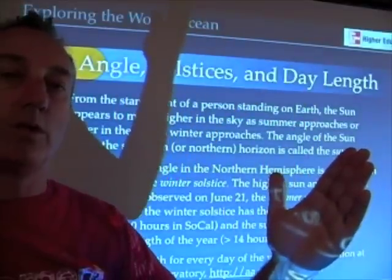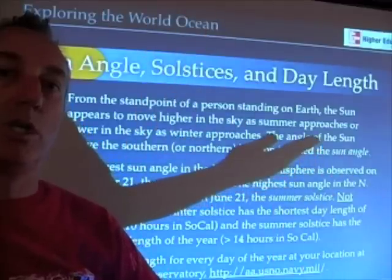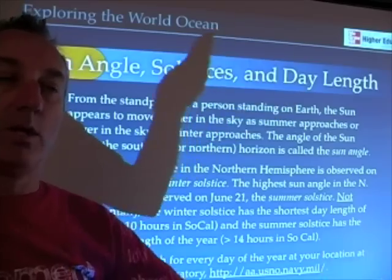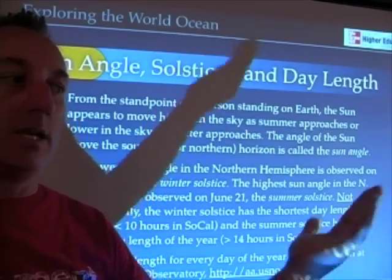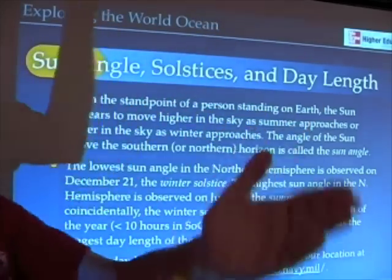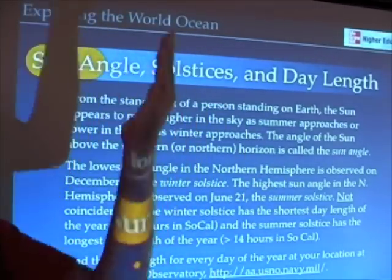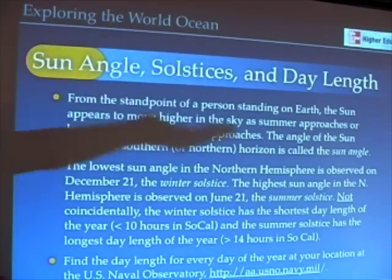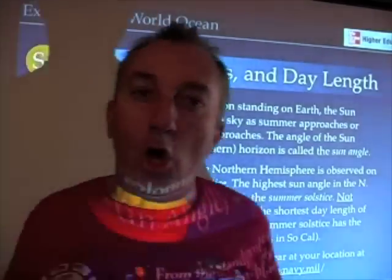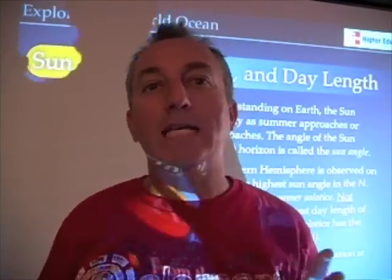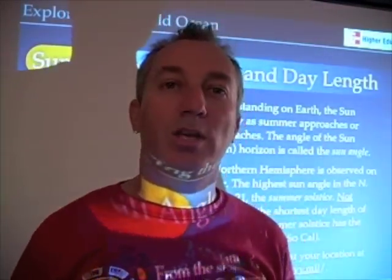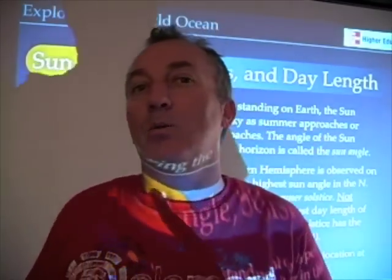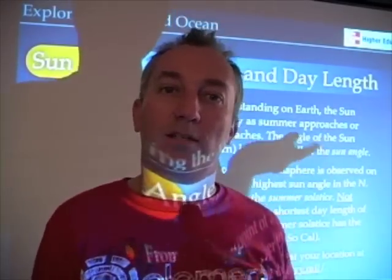Sun angle is also changing over the seasonal cycle — higher sun angles are associated with spring and summer, lower sun angles with fall and winter. It's the sun angle that determines where the sun rises and sets, and the sun describes a longer path across the sky in summer and a shorter path in winter because it's lower in the sky. The net result of high or low sun angles are changes in day length. We have long days in summer and short days in winter.